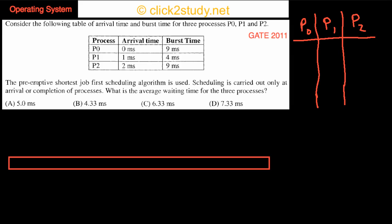What is given is that you have to consider preemptive shortest job first scheduling algorithm. Scheduling is carried out only at arrival or completion of processes. What is the average waiting time for these processes? So you have to find the average waiting time for this process, meaning after they arrive, how long they spend waiting.